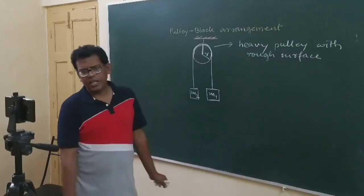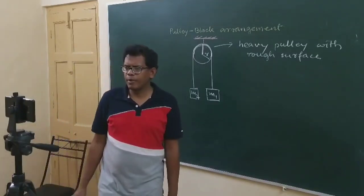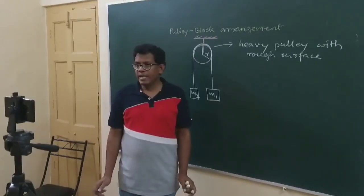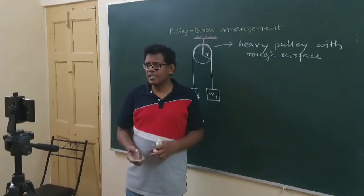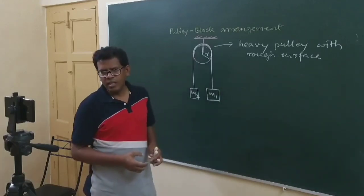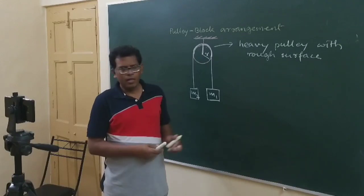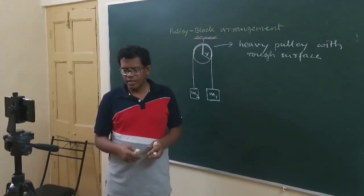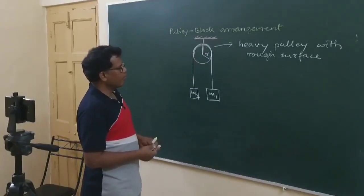Why are we considering the term radius here, which we did not do in the previous case? The reason behind this is that this time we will consider the rotation of the pulley along with the vertically upward and downward motion of the blocks available in this arrangement. I will explain it now.